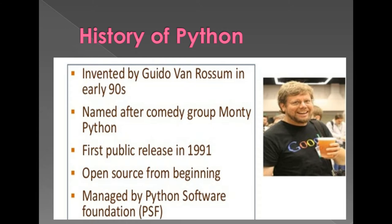Python was invented by Guido Van Rossum in the 1990s, and the name Python was given after a comedy group called Monty Python. Guido Van Rossum was a great fan of the Monty Python comedy group, so that was the reason behind giving this programming language the name Python. It was first released publicly in 1991.